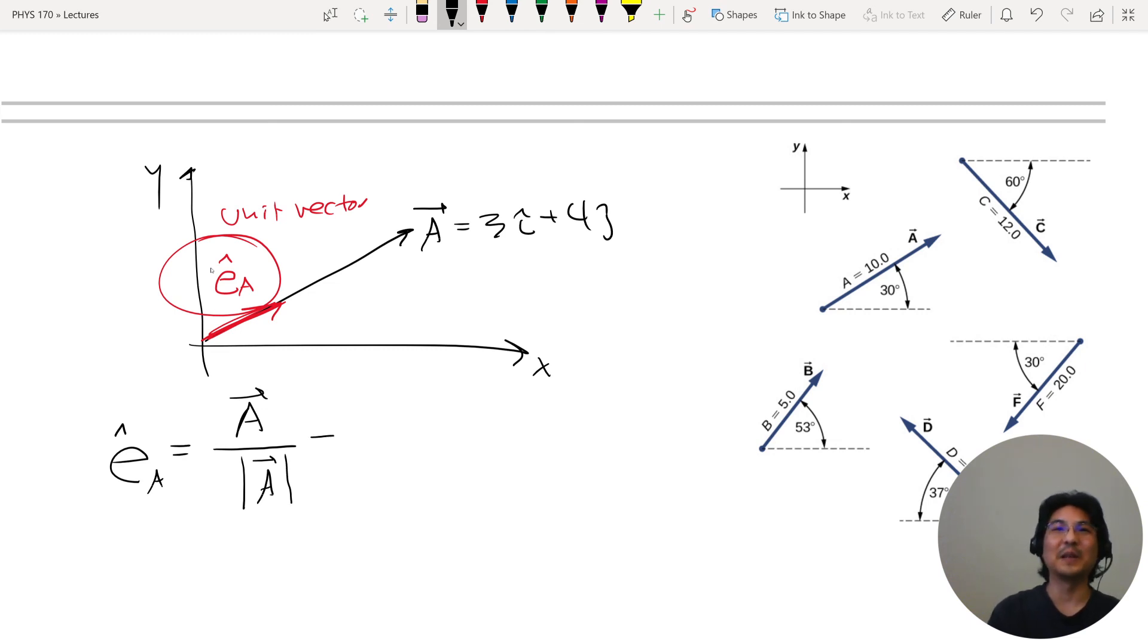So if I, let's say I use the numbers, so vector A is 3i plus 4j. And then the magnitude looks like Pythagorean theorem, this is 3 squared plus 4 squared. So the magnitude is 3 squared plus 4 squared, and then square root that whole thing. So that happens to be 9 and 16, so 5. So this is the unit vector in this direction.